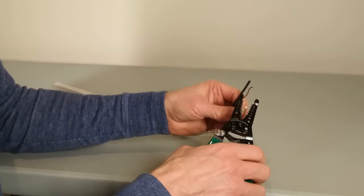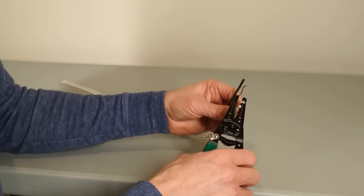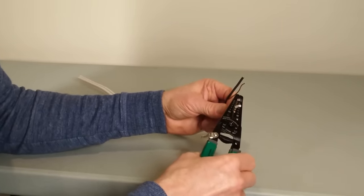Mistake number two is not twisting the wire stripper after you cut the insulation. Many DIYers start by just putting the wire stripper around, closing it, and trying to pull it off.